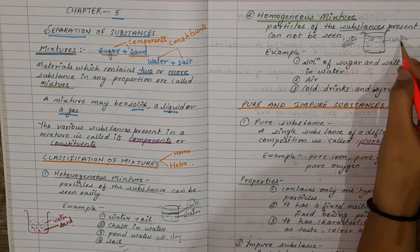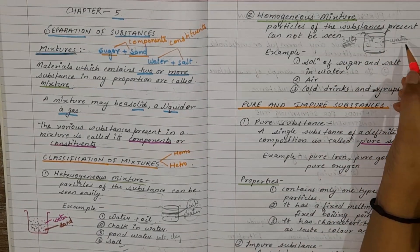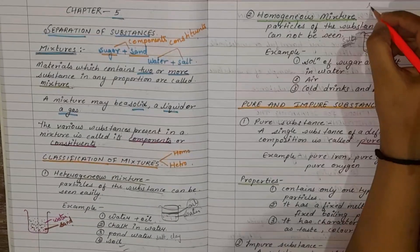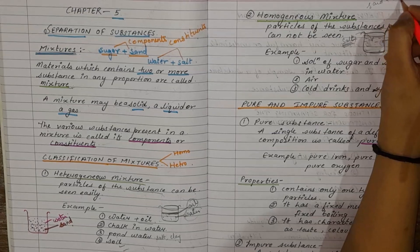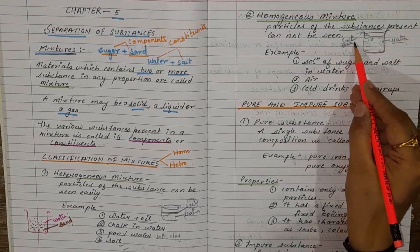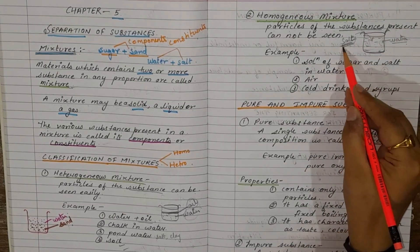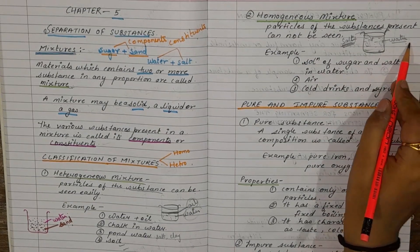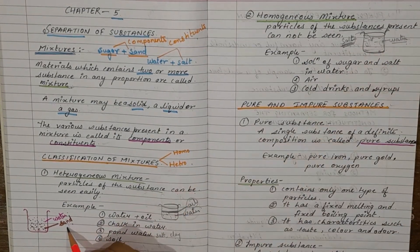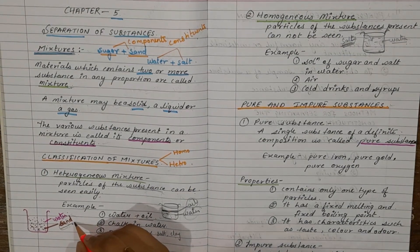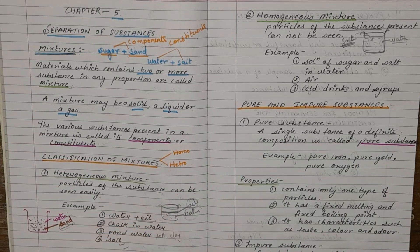We cannot identify salt separately from water by sight. But in a heterogeneous mixture, we can easily say this is sand and this is water. In a homogeneous mixture, we cannot identify separately that this is the salt particle and this is water, whereas in a heterogeneous mixture, we can identify and separate the sand particles from the water molecules.